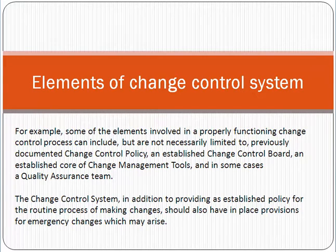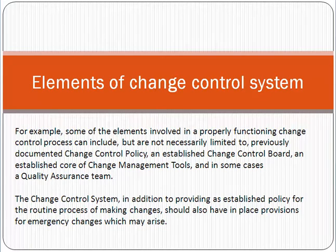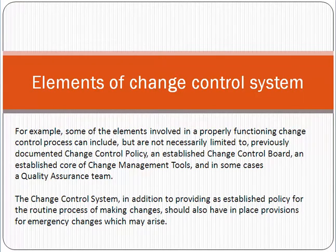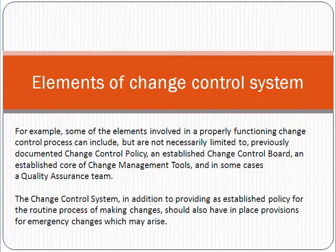All these documents are presented to the Change Control Board as a request for approval to implement the change at production. The CCB — which includes senior management, IT administration, project management, and QA — reviews everything. If they find any gap or problem, such as a QA report or user acceptance report showing the change is not okay, the CCB has full authority to reject or postpone the change. If everything is okay, they give go-ahead for production implementation.